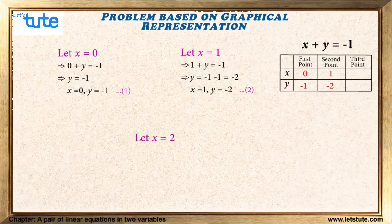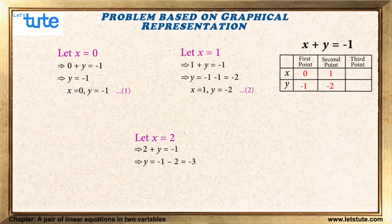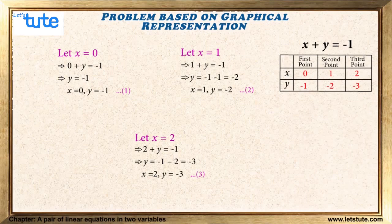For the third point, let x equal 2. Substituting into the equation, we get 2 plus y equals minus 1, so y equals minus 1 minus 2, which equals minus 3. Third point: when x equals 2, y equals minus 3. Observe in the table that as x increases by 1, y decreases by 1.